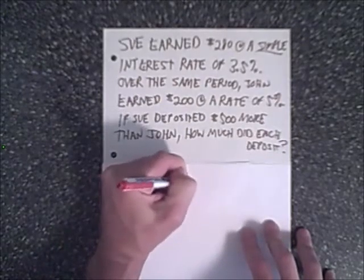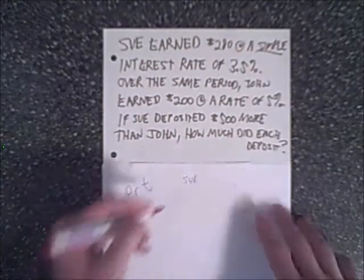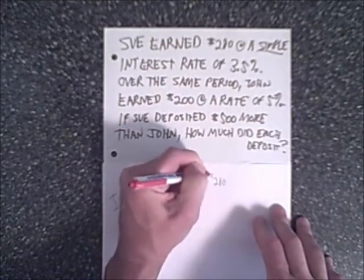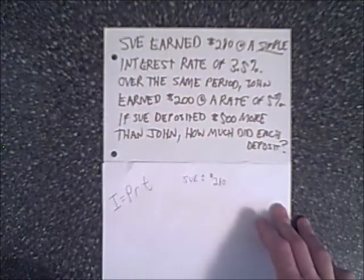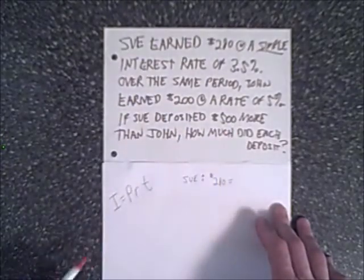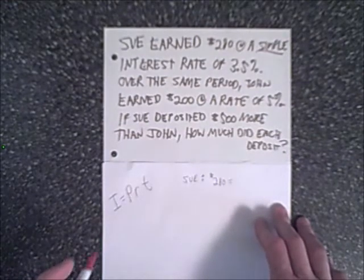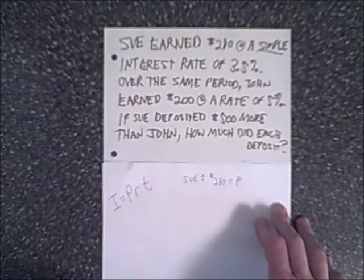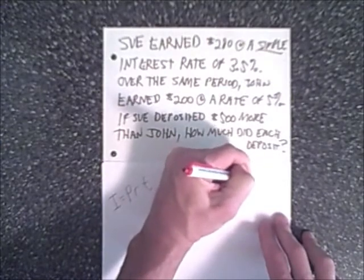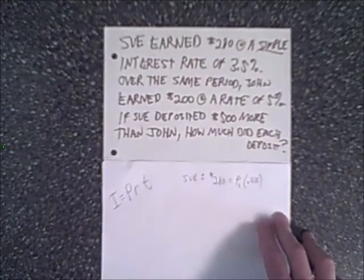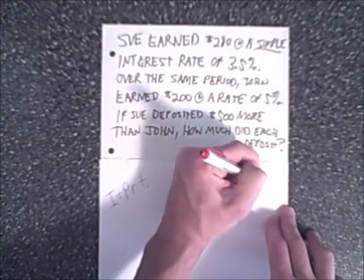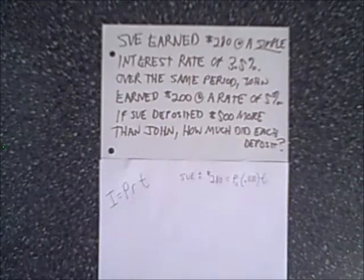Let's start with Sue since she's first in the problem. Her interest is $280, equals her principal. We know she deposited $500 more than John, but we don't know what that amount is. That's actually what we're looking for. So the principal for Sue, and the rate is 3.5%, so we're going to change that into a decimal, 0.035. And then the time is simply a period, and we'll call that T. So that's Sue's interest earning formula.